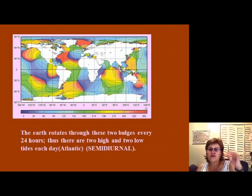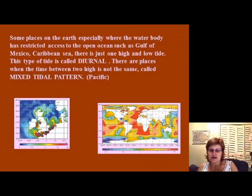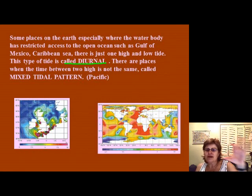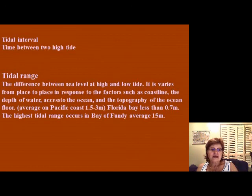When you have two high tides and two low tides, we call it semi-diurnal. In restricted water basins like the Gulf of Mexico, there may be only one high tide and one low tide — we call that diurnal. In places such as the Pacific coast, you have a mixed tidal pattern where the time between the two high tides is not always the same.